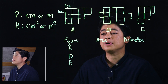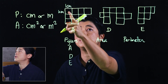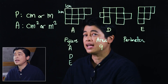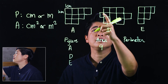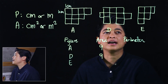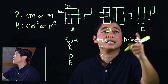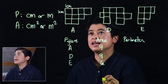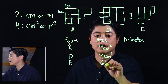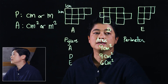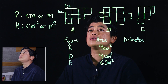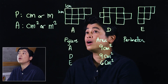For area A, counting gives us nine squares. For area D, counting also gives us nine. And area E gives us six squares. These are all measured in centimeters squared. For the perimeter, my suggestion is to count in one direction around the figure.